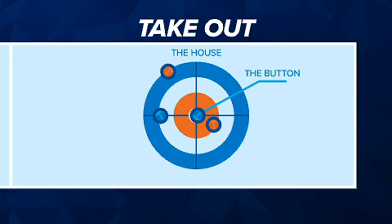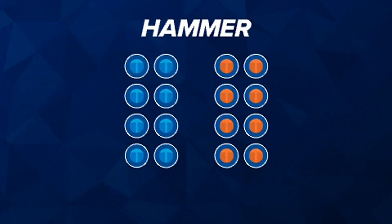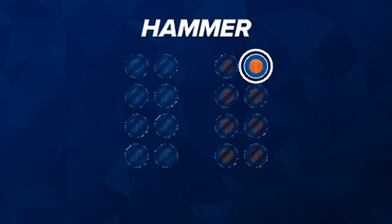Takeout. This means removing one stone from play by hitting it with another stone. Hammer. The team that throws the last stone in each end.